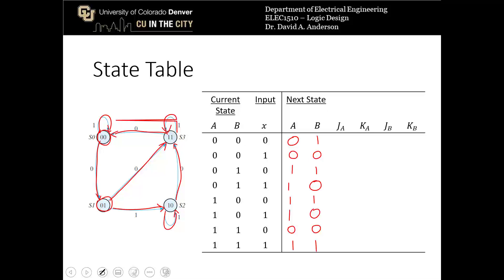Filling in the A flip-flop inputs: row 1, A goes 0→0, giving J=0, K=X; row 2, A goes 0→0, giving 0 and X; row 3, A goes 0→1, giving 1 and X; row 4, A goes 0→1, giving 1 and X; row 5, A goes 1→1, giving X and 0; row 6, A goes 1→1, giving X and 0; row 7, A goes 1→0, giving X and 1; row 8, A goes 1→1, giving X and 0.